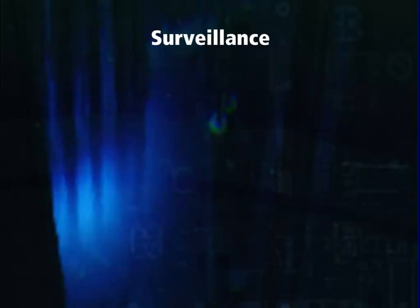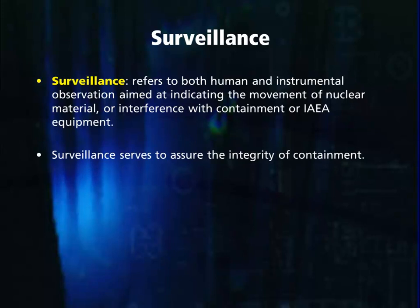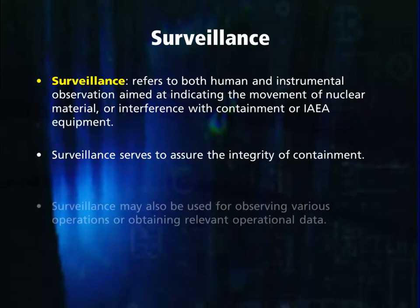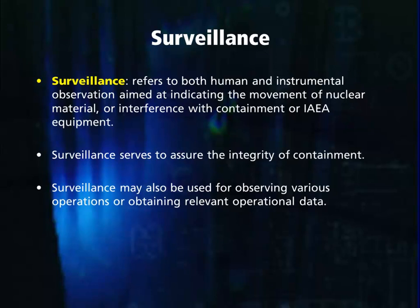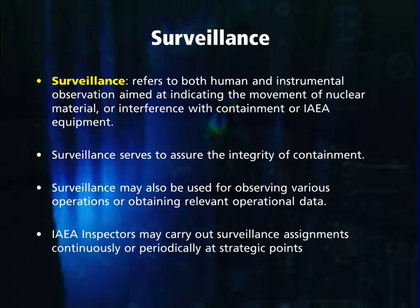What is surveillance? Surveillance refers to both the human or inspector and instrumental observation aimed at indicating the movement of nuclear material or interference with containment or IAEA equipment. Surveillance serves to assure the integrity of containment. Surveillance may also be used for observing various operations within a facility or obtaining relevant operational data about the facility. IAEA inspectors may carry out surveillance assignments continuously or periodically at strategic points within the facility, which can typically be thought of as any point of access to the facility. More detail will be provided later in the course on what these strategic points are.